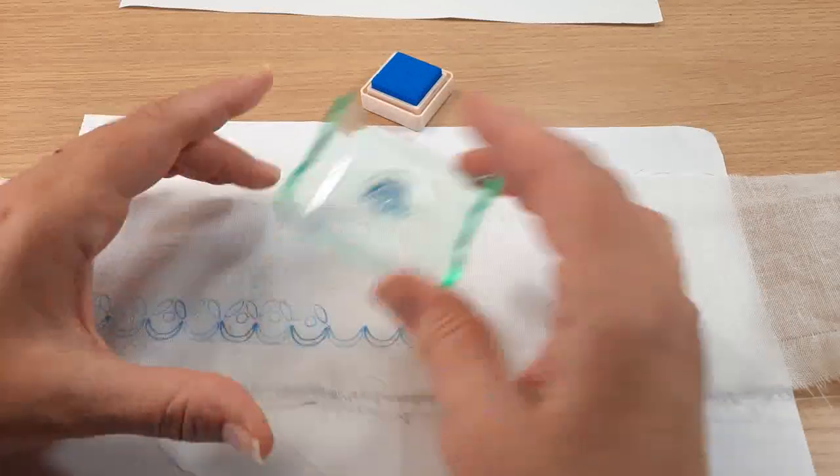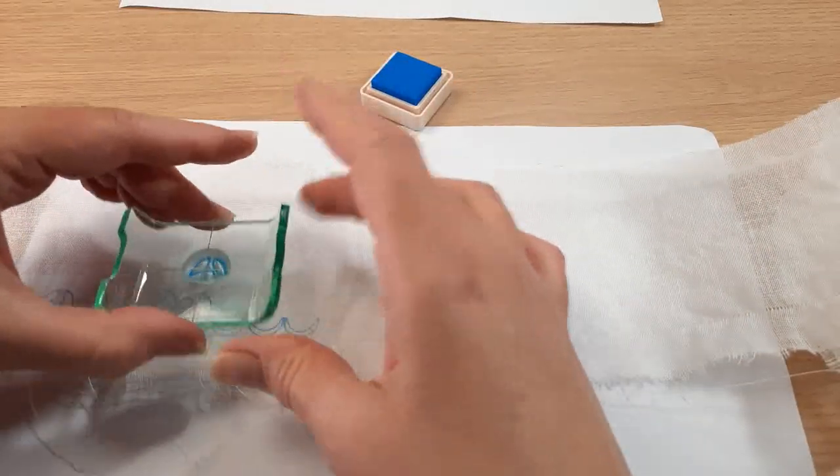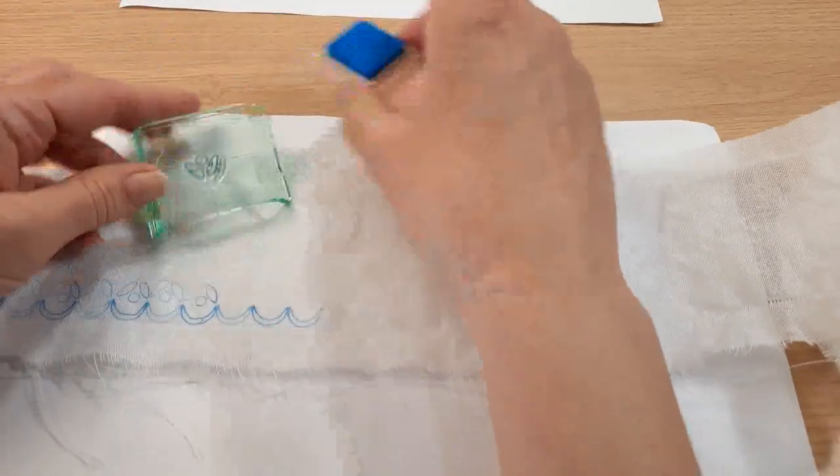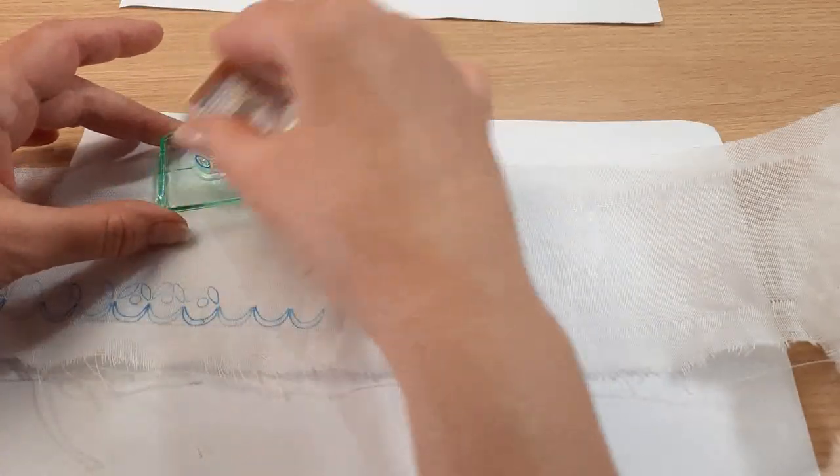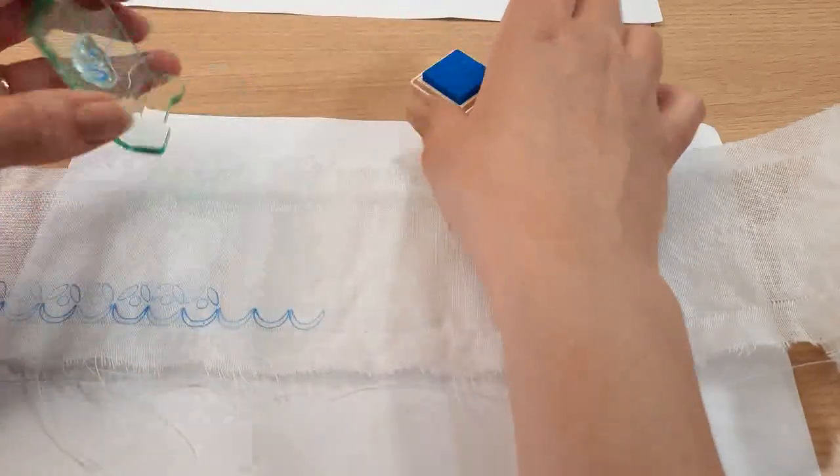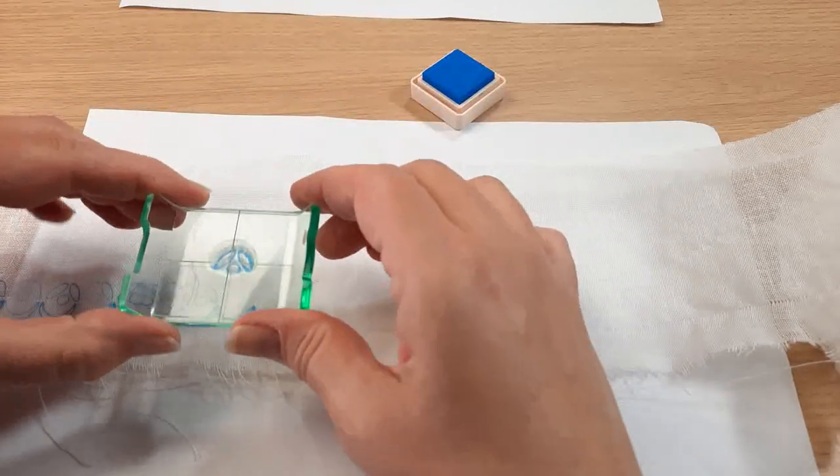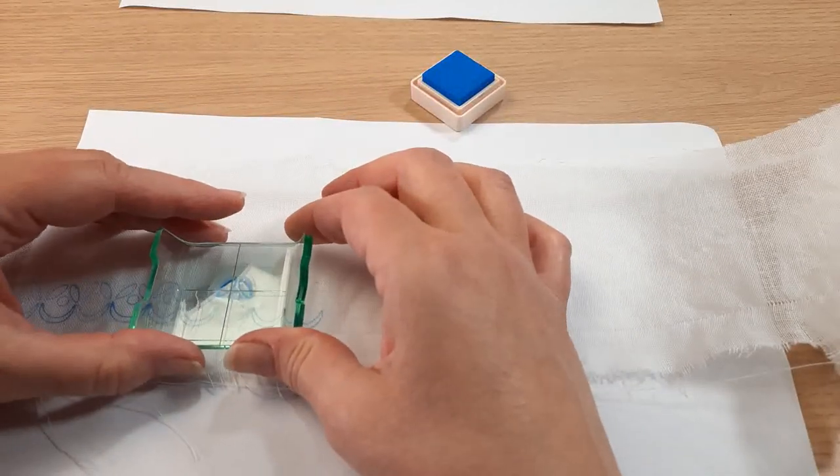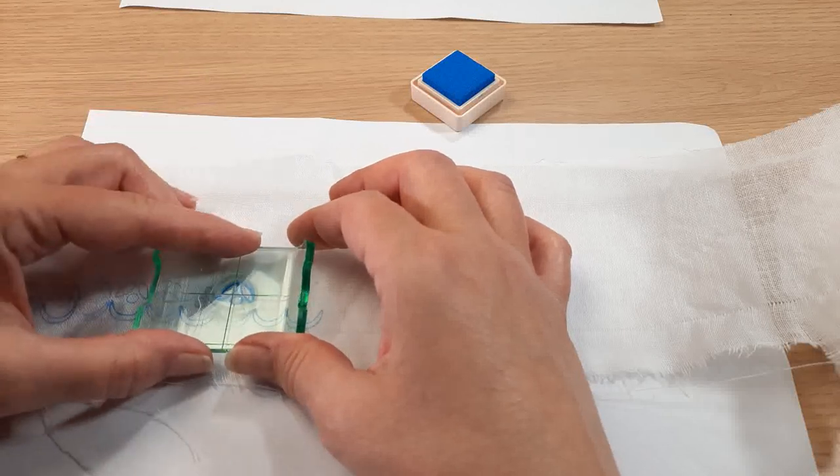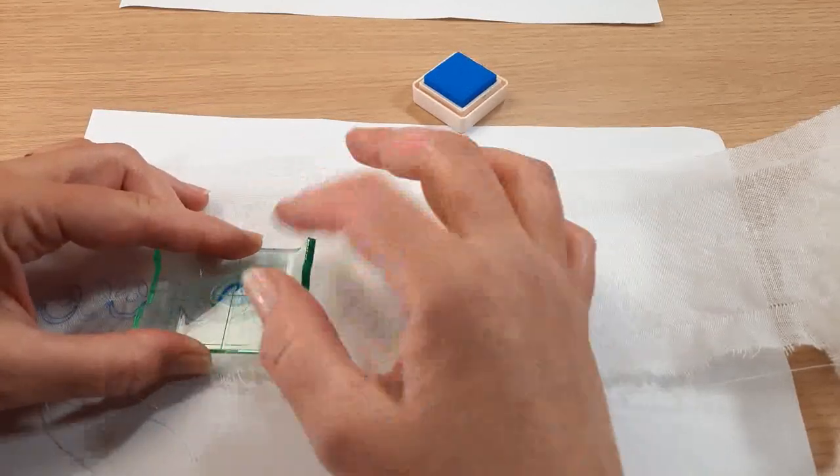And that can then mark your fabric or paper or whatever you're stamping where you don't want it. Don't want to turn that around the wrong way. That would have been a spot for deliberate mistake moment.